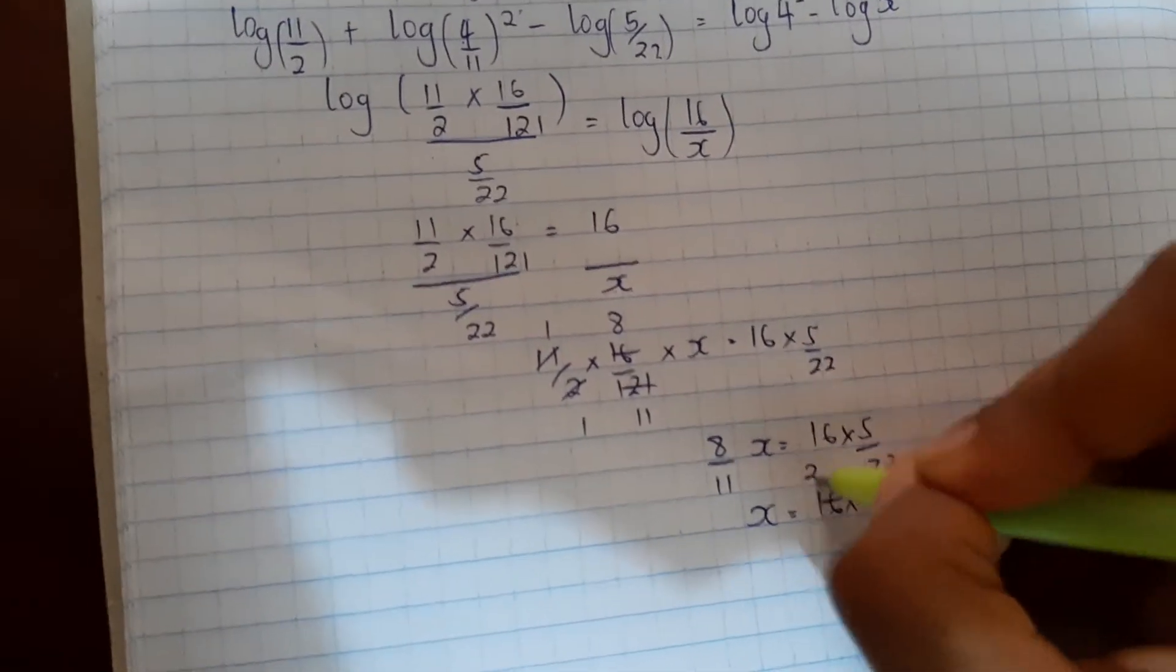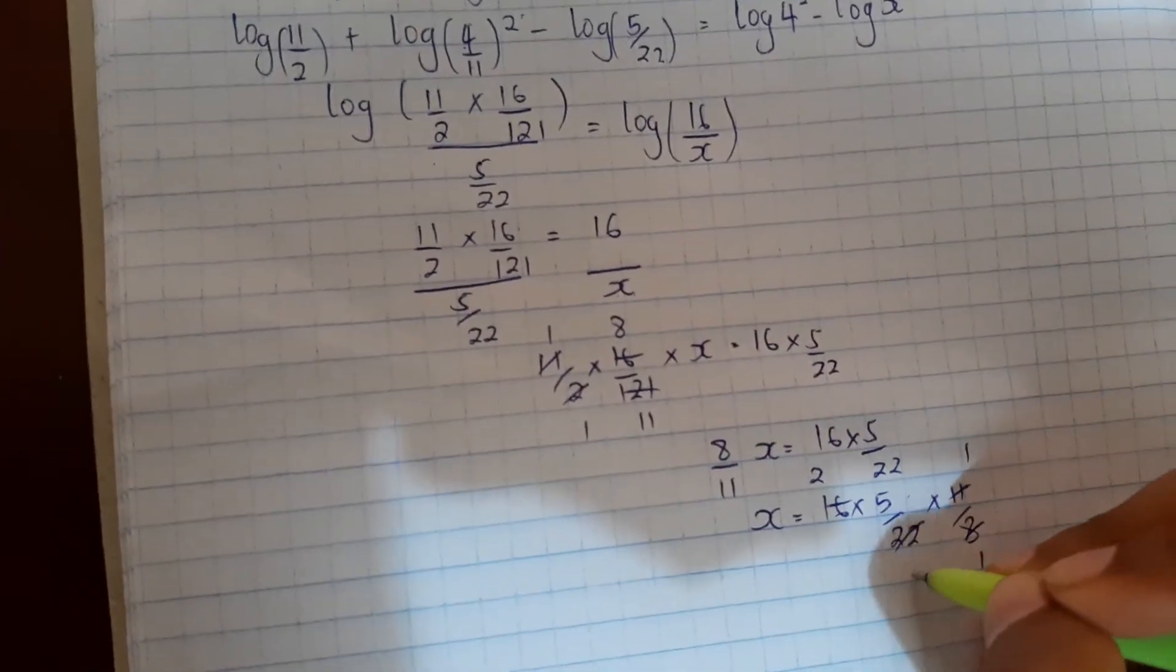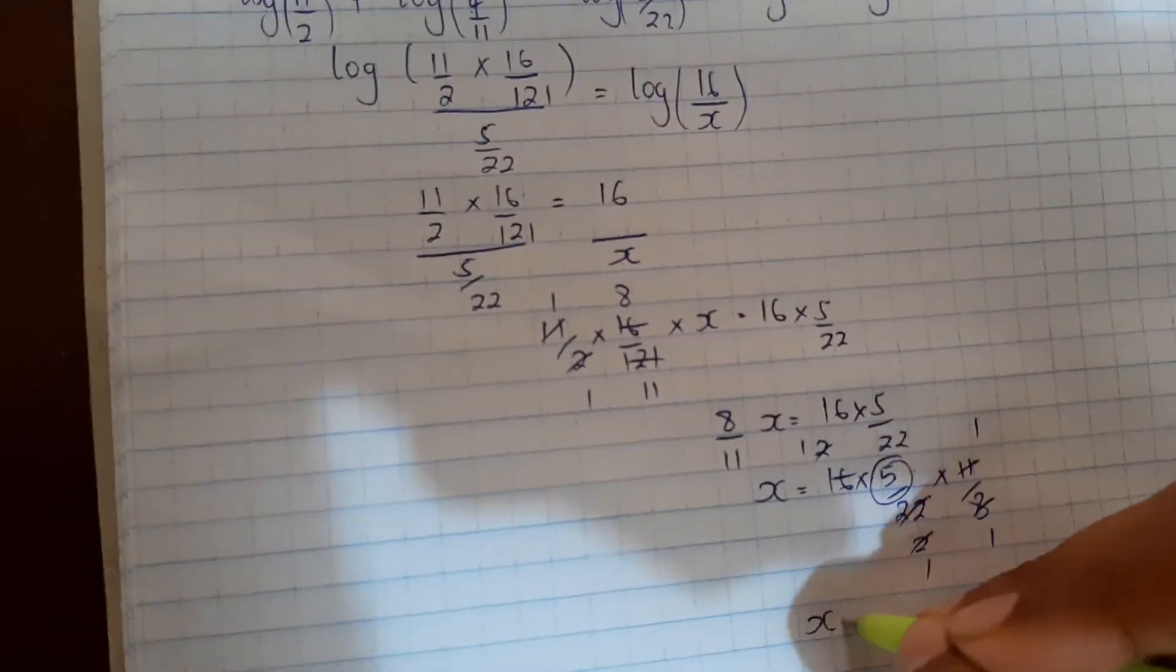Divide 16 by 8 gives 2, divide 22 by 11 gives 2. This gives 2 times 5 over 2 times 1, which equals 5. So x equals 5. Thank you.